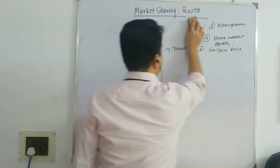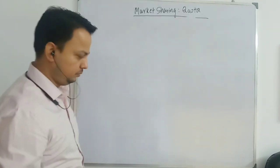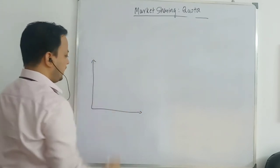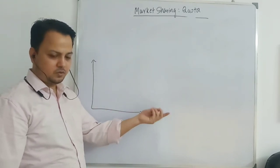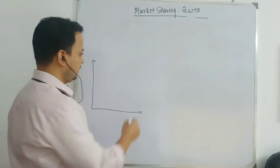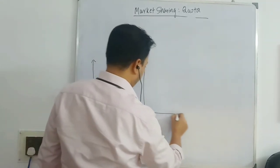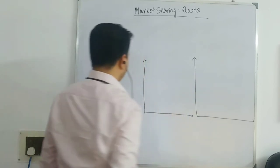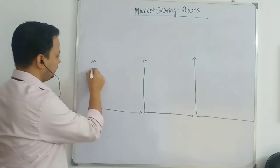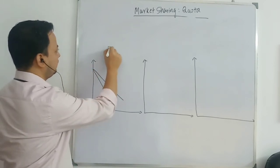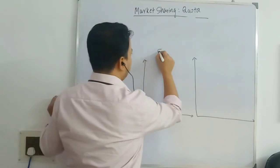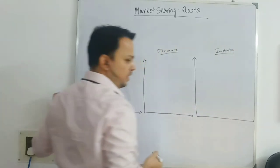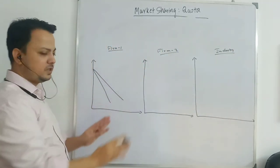I am going to tell you the technique to draw the graph. You have to draw three panels: firm one, firm two, and the industry. We are considering only the duopoly case — you can have more than two firms, but for simplicity we are taking two firms. When both firms have identical demand, they will start from the same intercept and have the same slope.